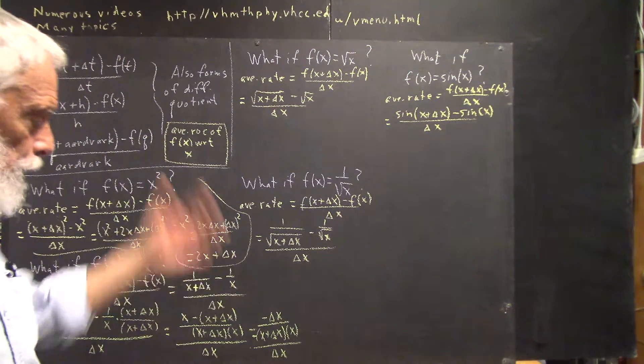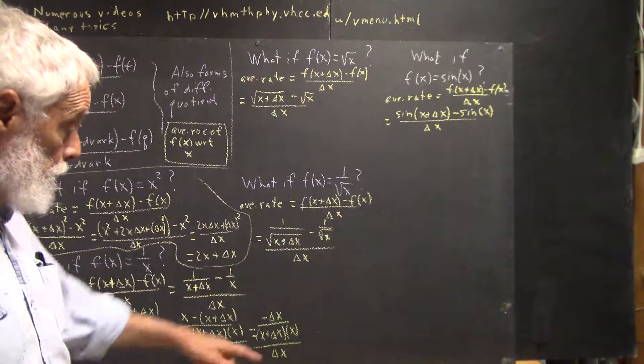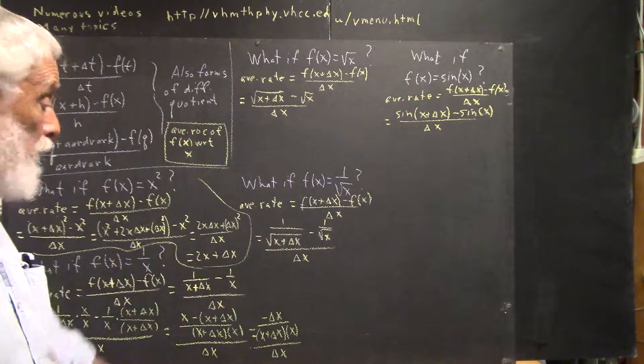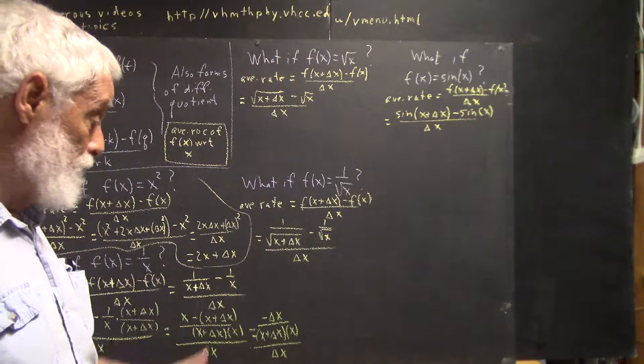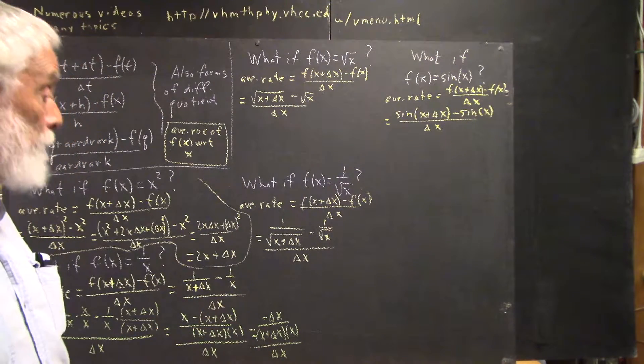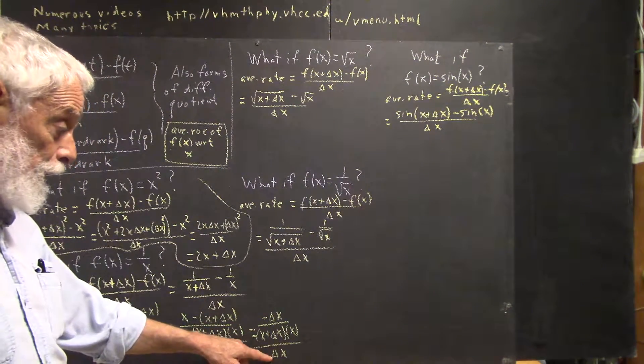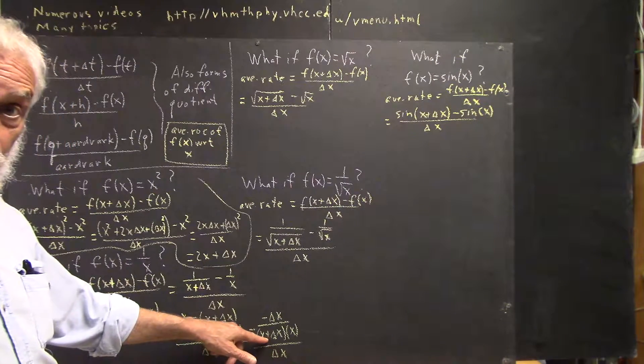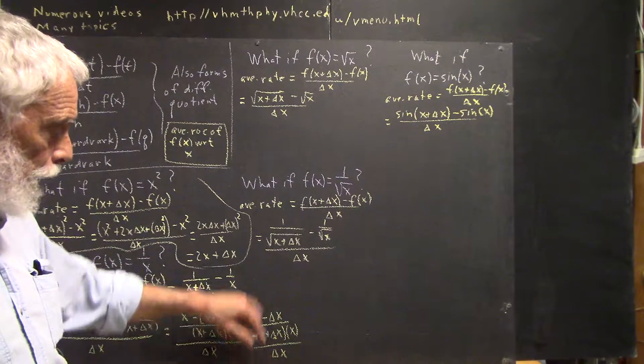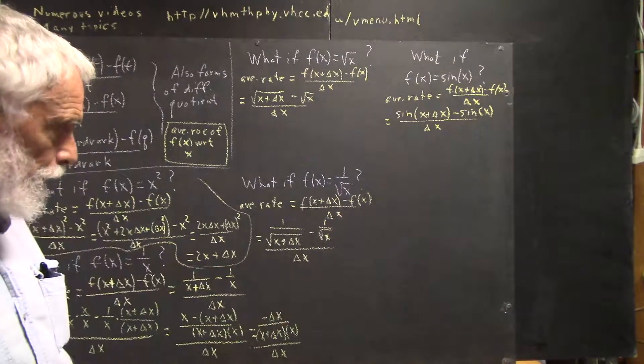Now, at this point, people want to start crossing out delta x's. Maybe you want to cross this one out with this one. You can't do that. There are two errors involved there. First place, this doesn't divide into the denominator here. In the second place, delta x is not a factor of x plus delta x.